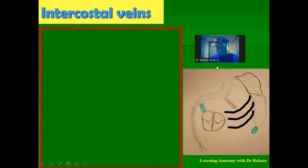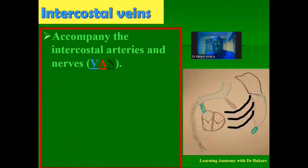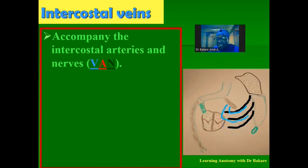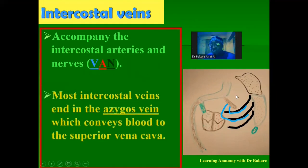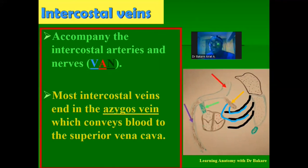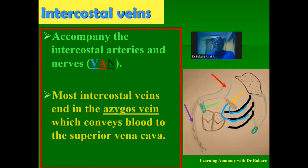The intercostal veins accompany the intercostal arteries and are arranged according to the VAN pattern — vein most superior. They run through the costal groove within the intercostal spaces. These veins drain into the azygous vein, highlighted in black, which drains into the superior vena cava. The superior vena cava unites with the inferior vena cava to form the vena cava, highlighted in green, which drains deoxygenated venous blood into the right side of the heart.